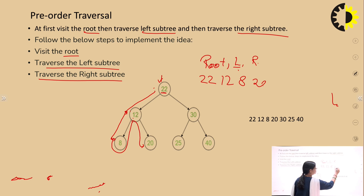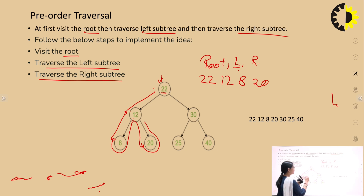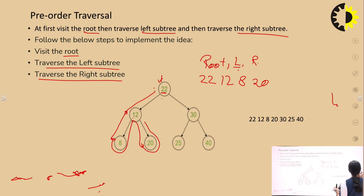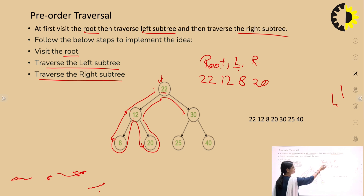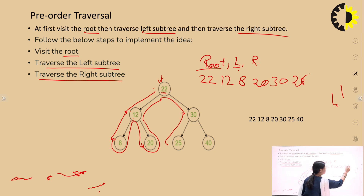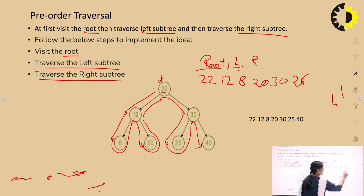Continuing the preorder traversal: after visiting 25, we traverse to the right child. So the preorder traversal sequence follows root, left, right at every level. This gives us the complete preorder traversal of the binary search tree.